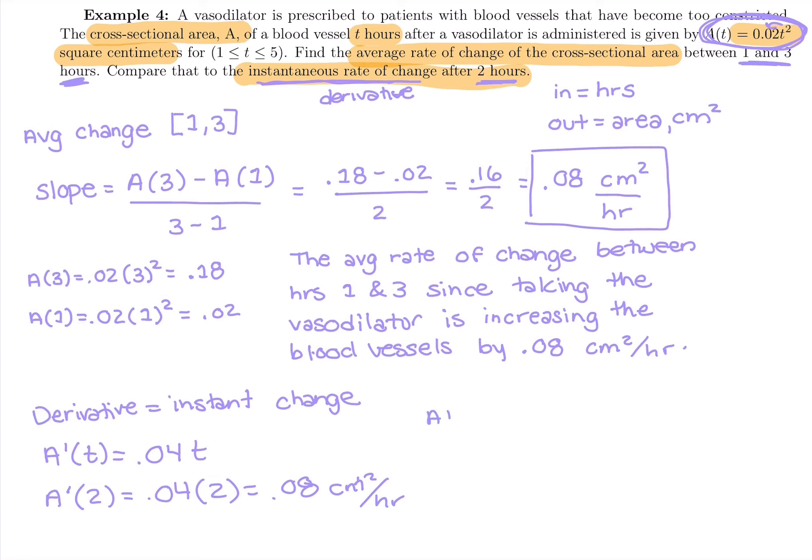So at hour two, the area is what? We got a positive slope at that instant. So it is increasing. The area is increasing by 0.08 centimeters squared per hour, which is not a really big surprise because we did that work in the first part. So it makes sense that the answers agree.